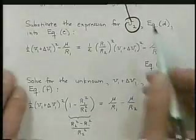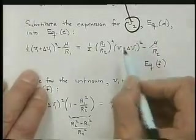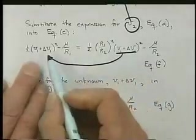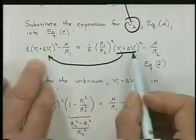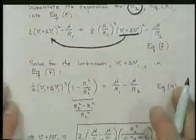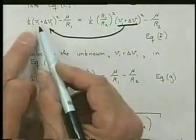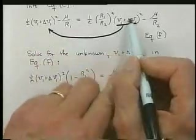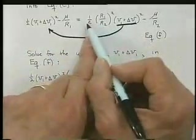We now take, now we're going to do a bunch of algebra, and we're going to move this stuff over to the left side because we have V1 plus delta V1 on both sides. So we have one half that quantity squared times one, and then this quantity over here, when we bring it to the left, will be minus one half the R ratio squared.